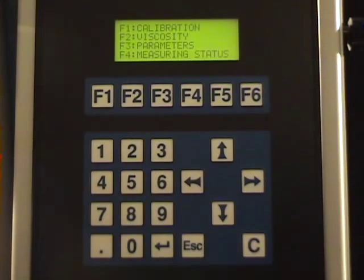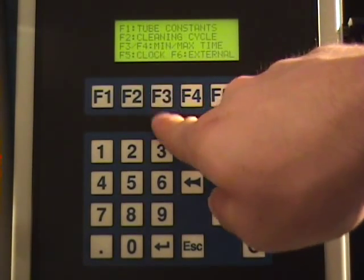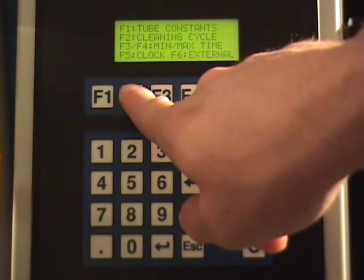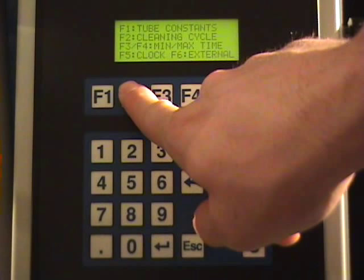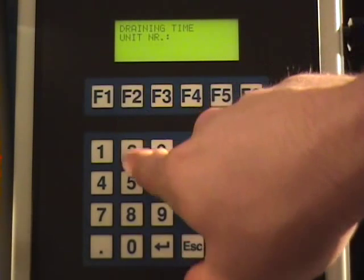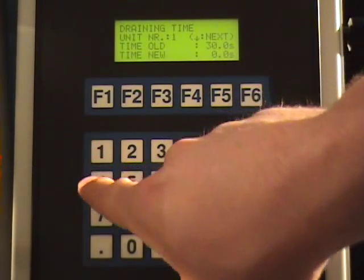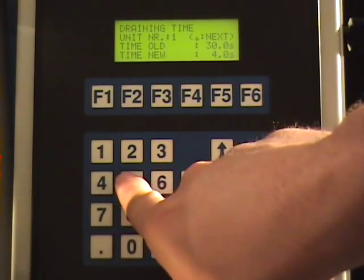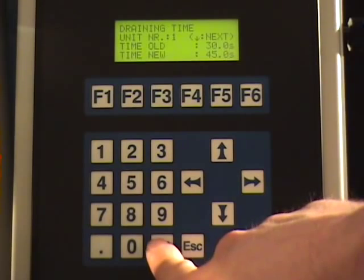Choosing F2 from the parameter menu brings up the cleaning menu. As with all settings, each tube can be separately configured allowing maximum flexibility and customization. First, the initial draining period needs to be set. During this period, the pump evacuates the tube but no solvent is injected.